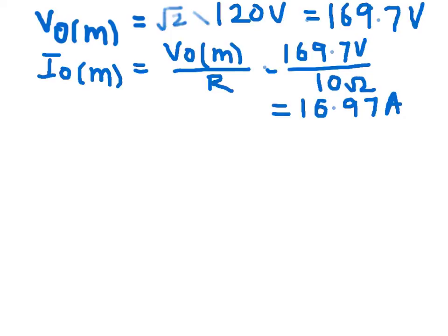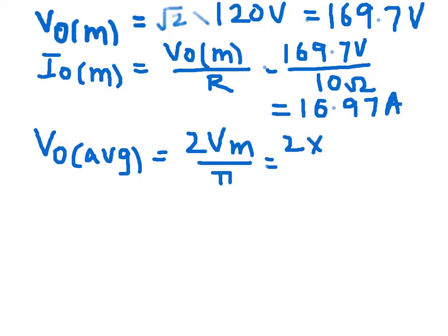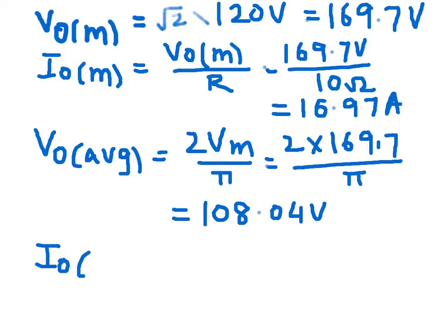Next part: we have to find the average value of the load, V_o average. The formula for V_o average is 2 times V_m divided by π. We substitute the peak value: 2 times 169.7 divided by π gives you 108.04 volts. For calculating the average value of load current, divide this voltage value by the resistance, giving you 10.80 amperes.